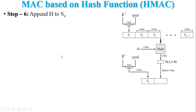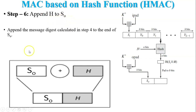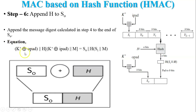Step 6: append the message digest calculated in Step 4 to the end of So. Our equation is: So || Hash(Si || M), that is, So appended with the hash value which was calculated from the secret inner value Si and the appended message M.